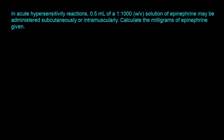Let's look at another question: in acute hypersensitivity reactions, 0.05 milliliters of a 1 is to 1000 weight by volume solution of epinephrine may be administered subcutaneously or intramuscularly. Calculate the milligrams of epinephrine given. Our goal is to find the amount in milligrams of epinephrine. We have ratio strength 1 is to 1000 and volume 0.5 milliliters. Starting with the ratio strength: 1 gram of epinephrine in 1000 milliliters of preparation. We want to find how many grams are in 0.5 milliliters.